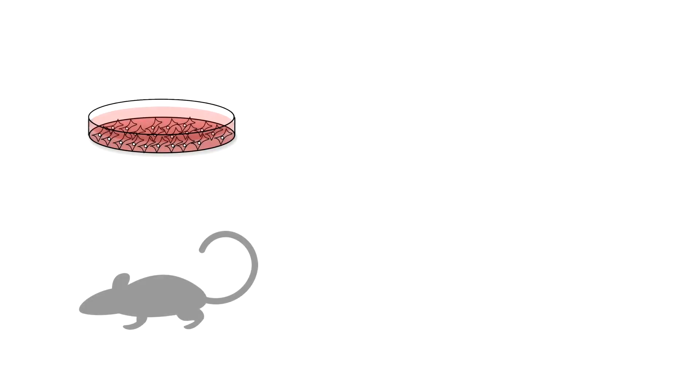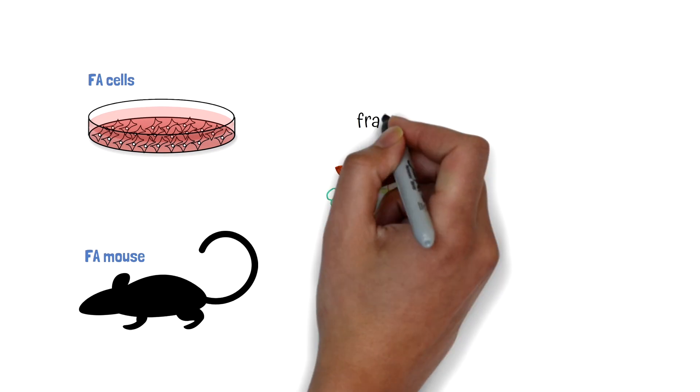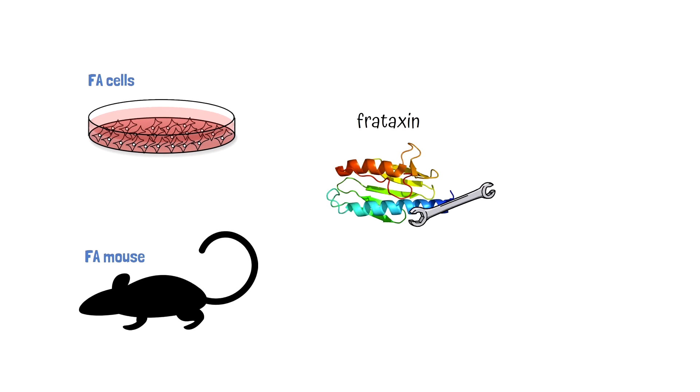Experiments in cells and animal models have shown frataxin's role in creating iron-sulfur clusters is key to the electron transport chain, as well as many other important cellular processes.